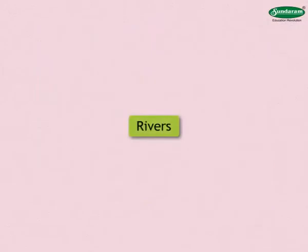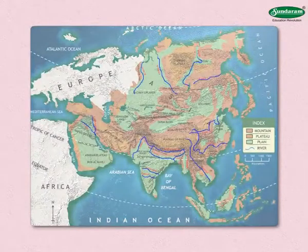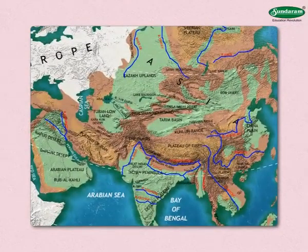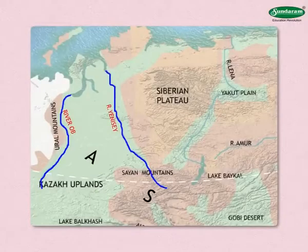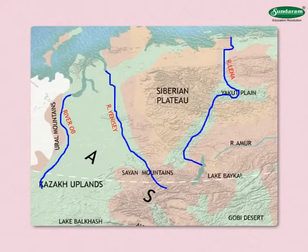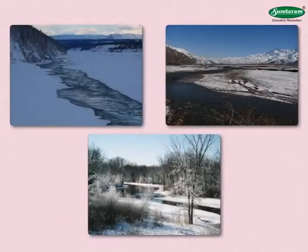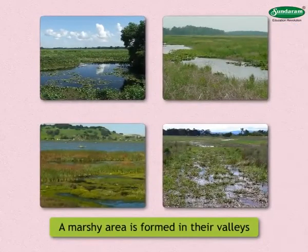There are many rivers flowing in different directions from the central mountainous region, classified as follows. Rivers meeting the Arctic Ocean: The rivers Ob, Yenisei, and Lena in the north of the continent are included in this group. In winter, the water near their mouths freezes and obstructs their flow, so a marshy area is formed in their valleys.